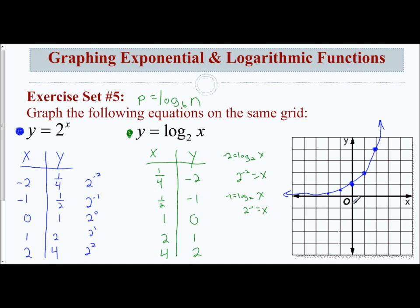Let's graph it. At 1, I'm at 0. At 1 half, I'm at negative 1. At 1 fourth, I'm at negative 2. At 2, I'm at 1. At 4, I'm at 2. Now I'll graph this curve - it's going to go up to the right and approach that y-axis for the asymptote.